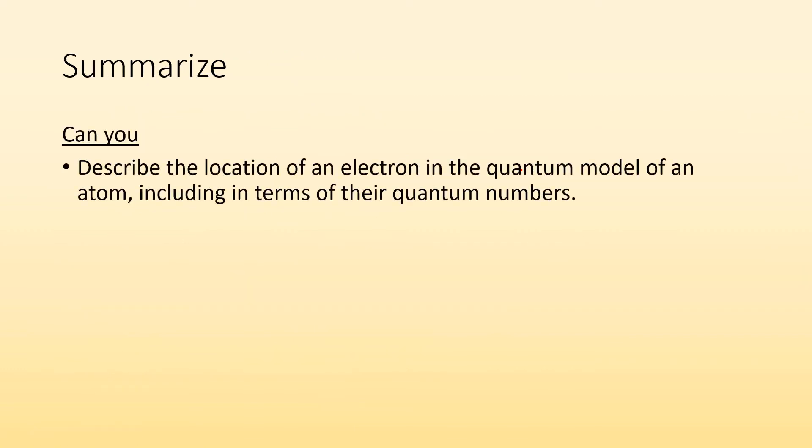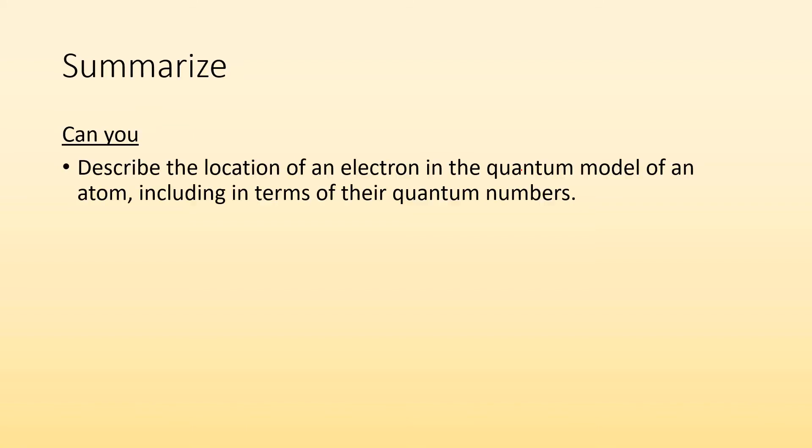So summarize. Can you describe the location of an electron and the quantum model of an atom, including in terms of their quantum numbers? That's pretty much it. You got n, you got from zero up to n minus one, and that's your L. You got n, L, and then ML. You got anywhere from negative L to positive L. So those are your kind of rules. All right. Hope you found it helpful. See you in class. Okay, bye.